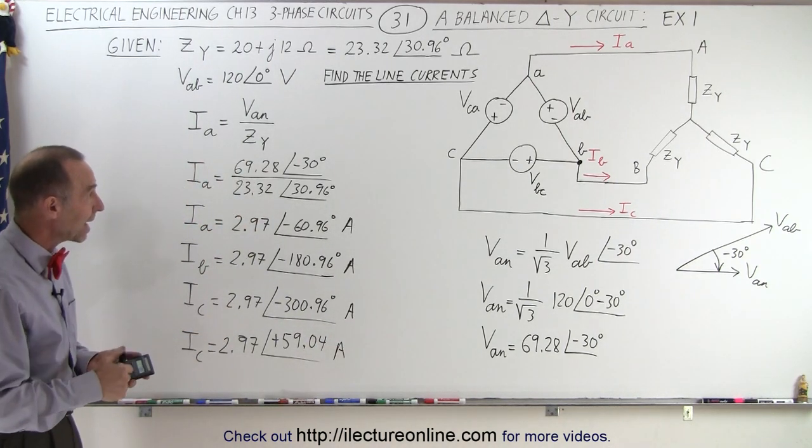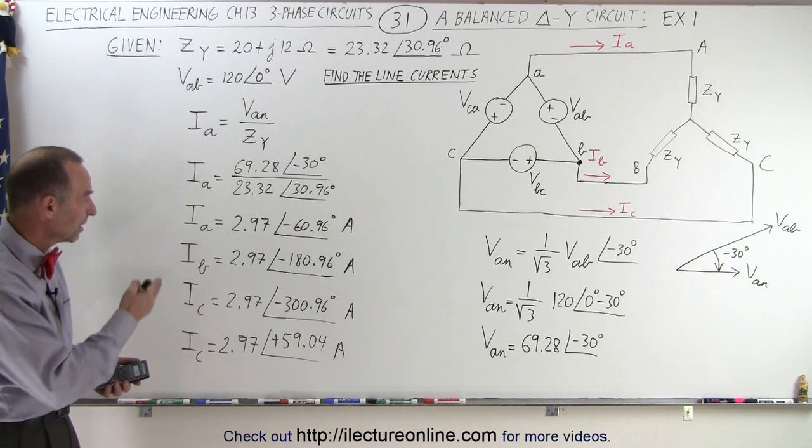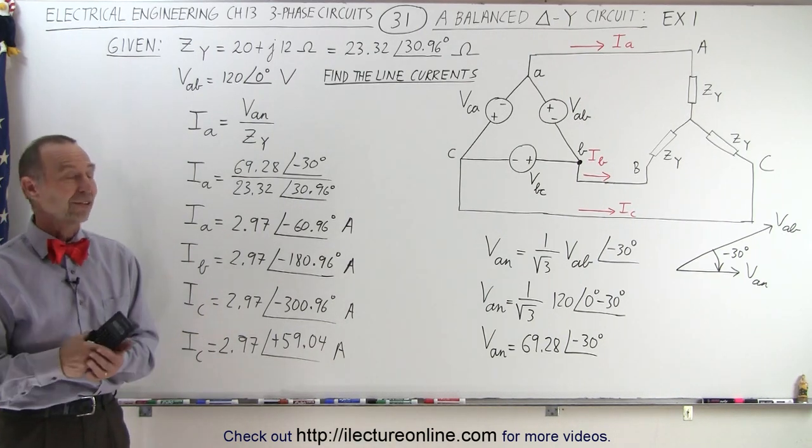And so there are the three line currents Ia, Ib, and Ic for a delta Y circuit. And that's how it's done.